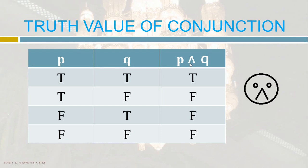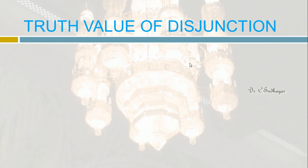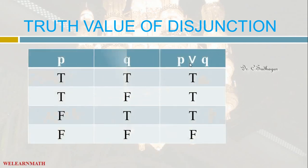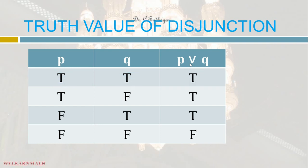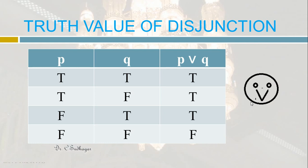Now let us see the truth value of disjunction, or the OR operator. For the OR operator, we look for T. If there is at least one T, the final answer is T. So the second row has one T — answer is T; the third row has one T — answer is T; the fourth row has no T, so we get F. You can remember this with a smiley: when you are smiling with happiness, look for T. If there is at least one T, the final answer is T; if there is no T, like the fourth row, put F.